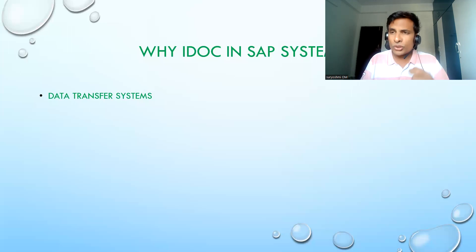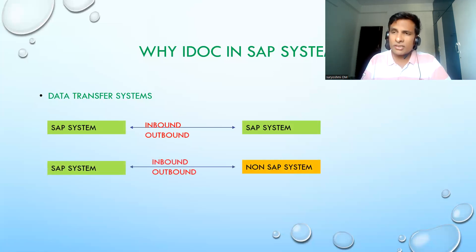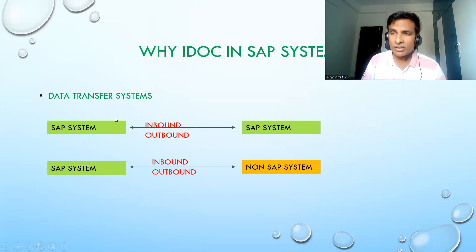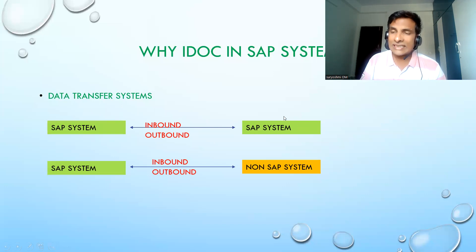Let's see a small example of how communication happens. For SAP-to-SAP communication, an IDOC will be generated. For example, when sending material master data, that data is captured and sent to the other system. The sending system is called the source system and the receiving system is called the target system. The arrow represents inbound and outbound directions.